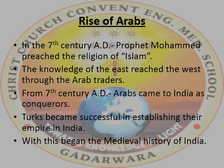Rise of Arabs: In the 7th century AD, Prophet Muhammad preached the religion of Islam. This united the Arab tribes and they became politically powerful. They conquered many parts of Western Asia like Jordan, Syria, Iraq, Turkey, Persia, and Egypt. The Arabs were expert traders, trading with India, China, Europe, and Eastern and Western Africa, which made them very rich. They used their wealth for the development of art, science, and literature, and spread the knowledge of India to the Western countries. From the 7th century AD, the Arabs came to India as conquerors. The Turks became successful in establishing their empire in India, and with this began the medieval history of India.